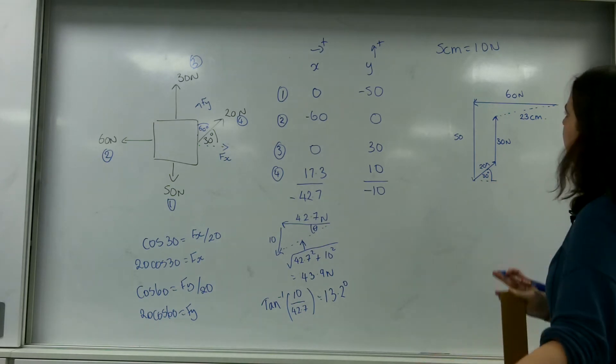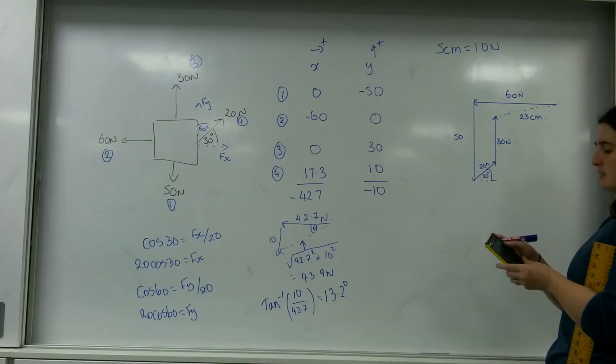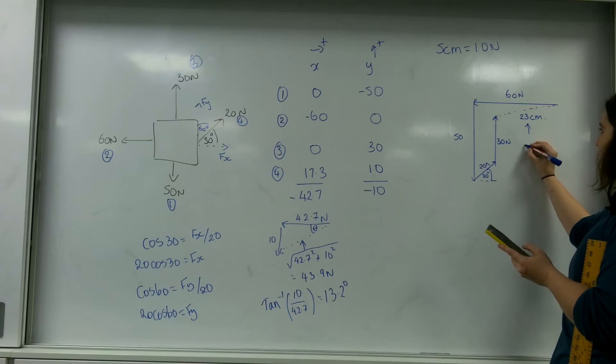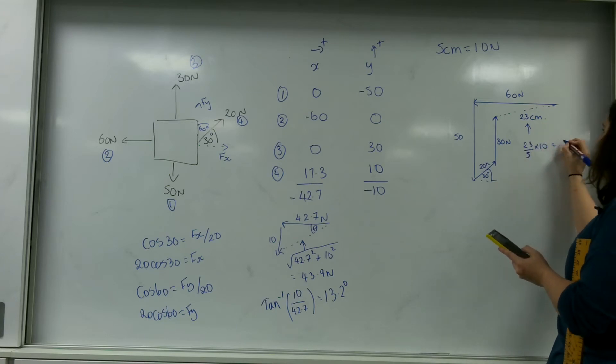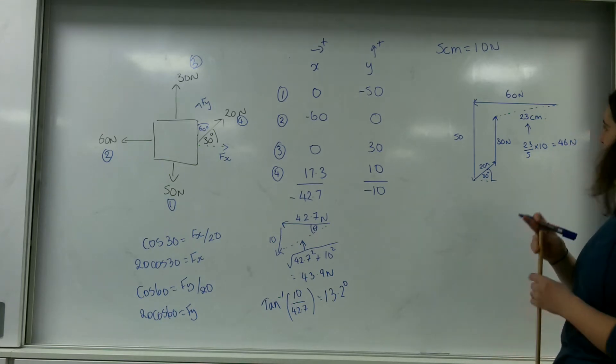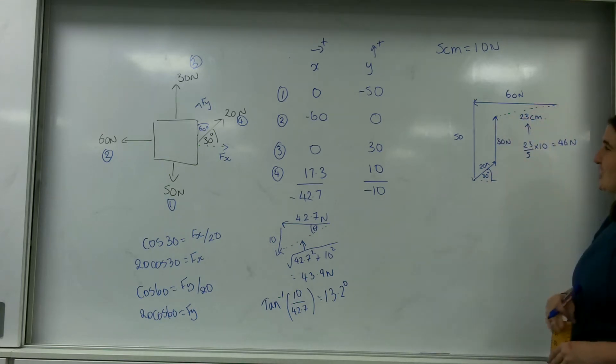So if I know that 5 centimeters is 10 newtons, let's do 23 divided by 5 and then times that by 10. So 23 divided by 5 times by 10 gives me 46 newtons. So that there with my measurement is 46 newtons.